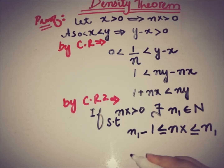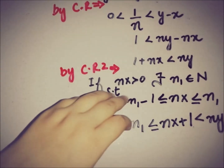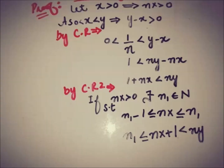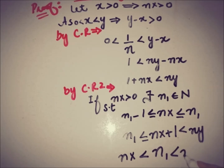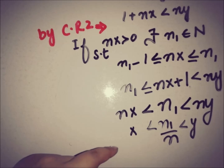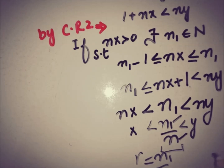From this we can write that n1 is less than nx plus 1. Combining: n1 is less than nx plus 1, and from above 1 plus nx is less than ny, so n1 is less than ny. Also nx is less than n1 and n1 is less than ny, giving nx less than n1 less than ny. Dividing all sides by n gives x is less than n1/n, which is less than y. Here n1 and n are both natural numbers, so we let r equal n1/n, which is a rational number.